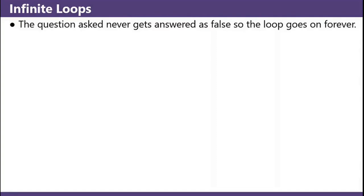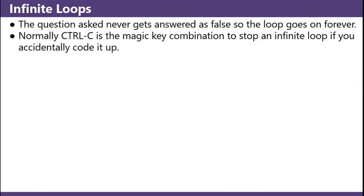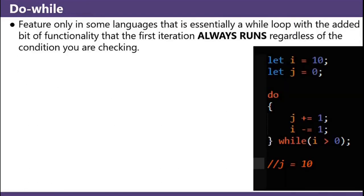Infinite loops: the question asked never gets answered as false, so the loop goes on forever. Normally, control C is the magic key combination to stop an infinite loop if you accidentally code it up. Simplest example: while true, x equals 5. Do while: a feature only in some languages, essentially a while loop with the added bit of functionality that the first iteration always runs regardless of the condition you are checking. This is the same as the last example on the right, except the first run always completes without checking if i is greater than zero.